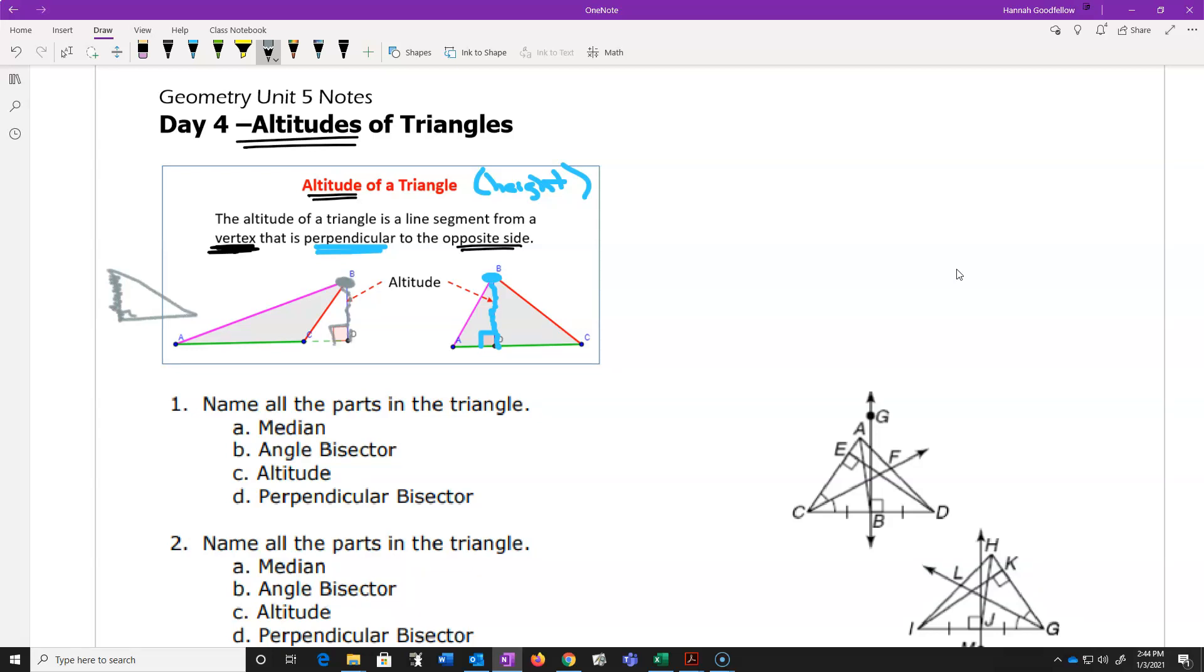But the key thing here is to remember is it starts in a vertex, and it goes to the other side and makes a right angle. That's all it does, just makes a right angle. Now, what we're going to do down here below is we're going to do some things where it says name all the parts. Now, if you're going to do this really well, you have to know all four of the different kinds that we've just discussed.